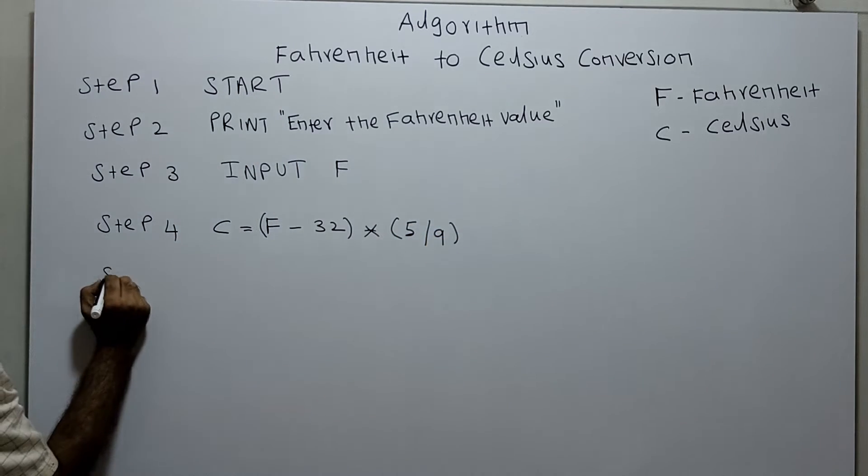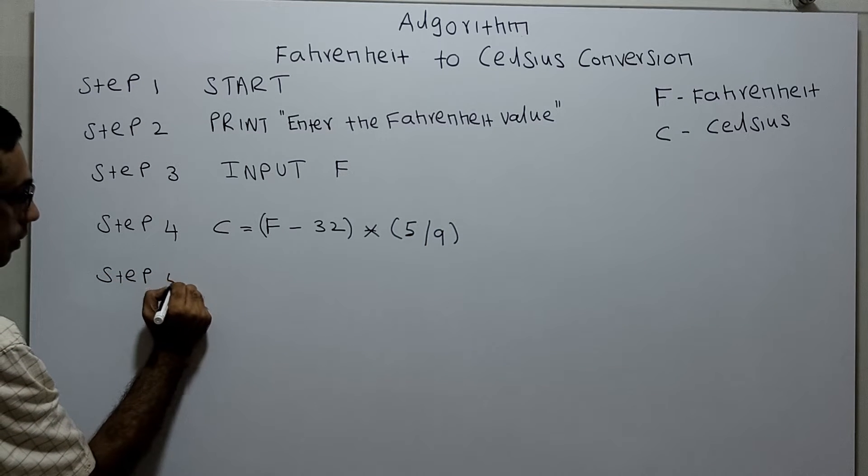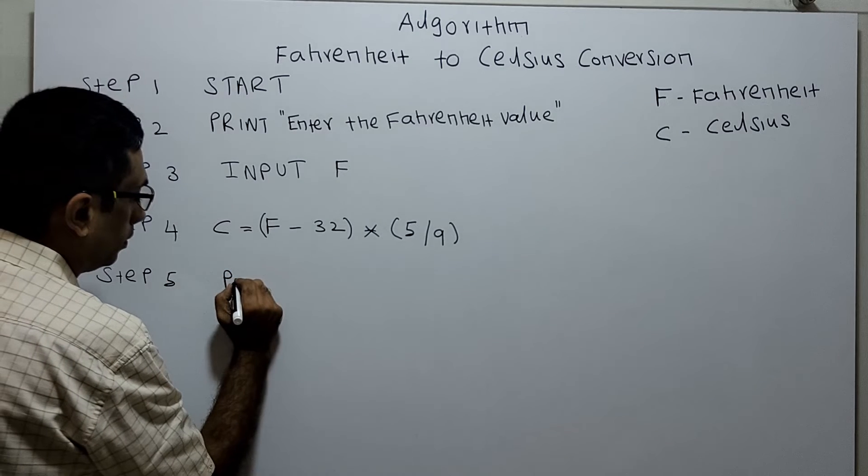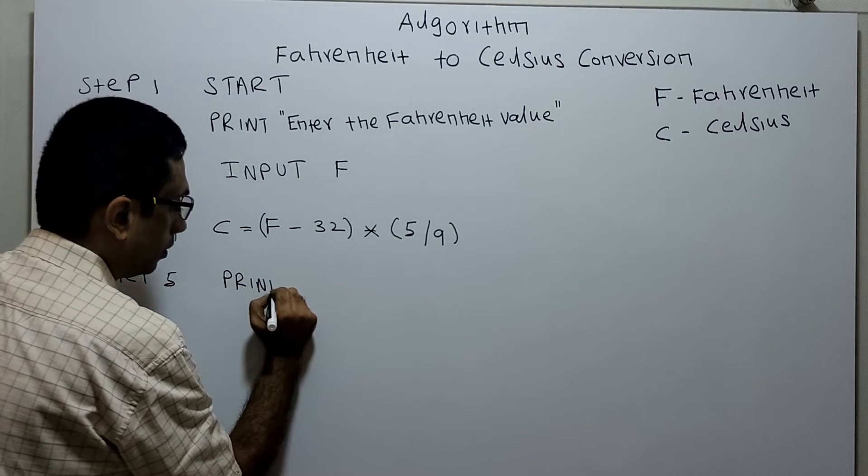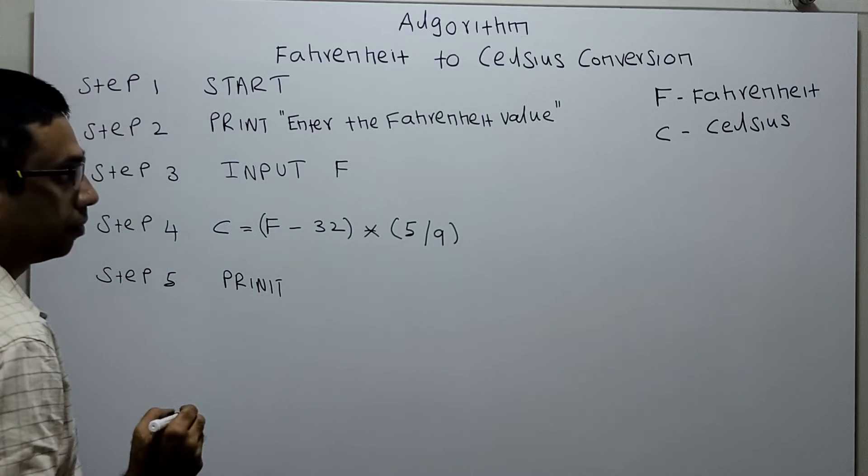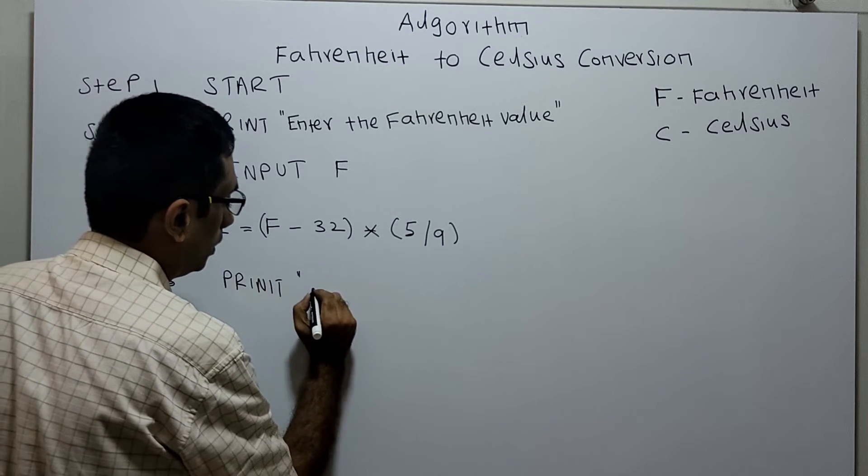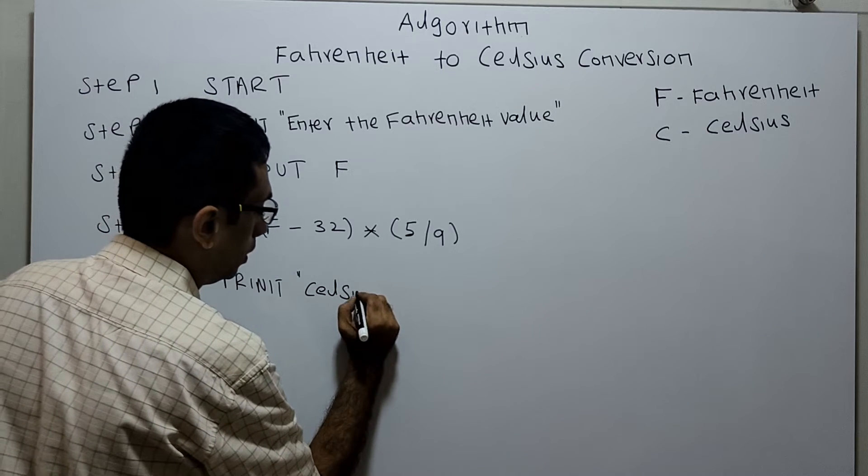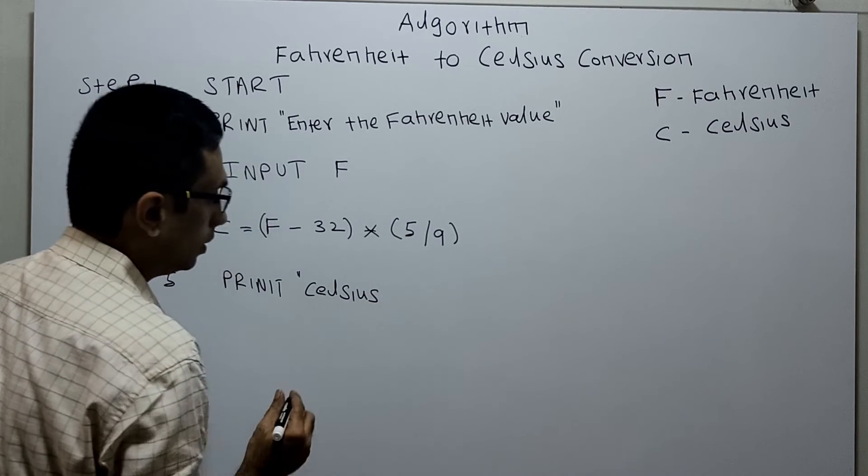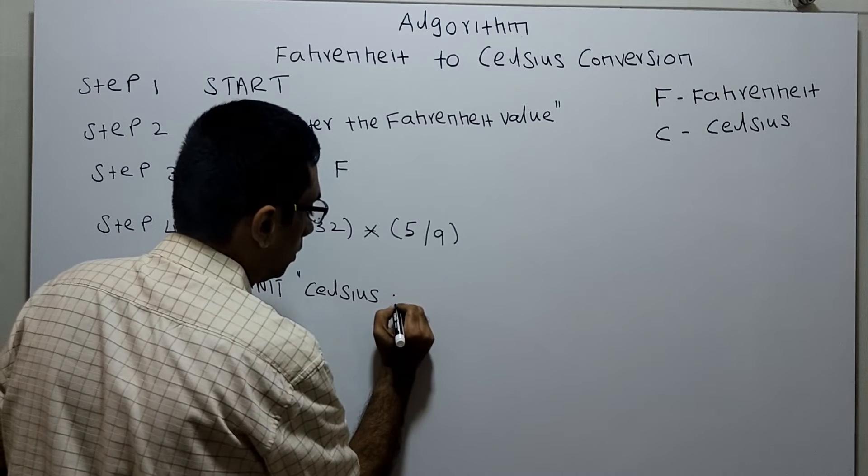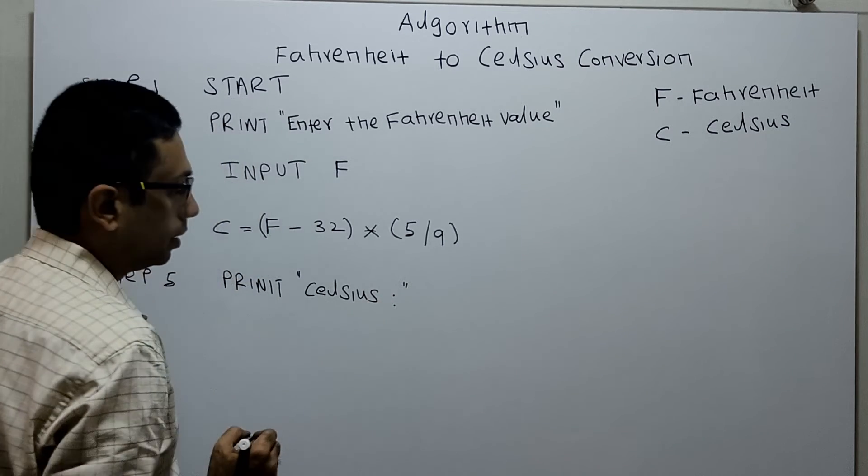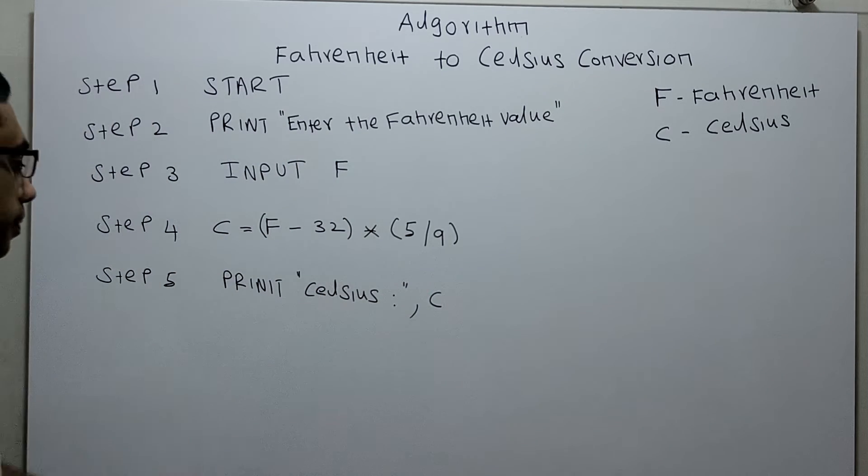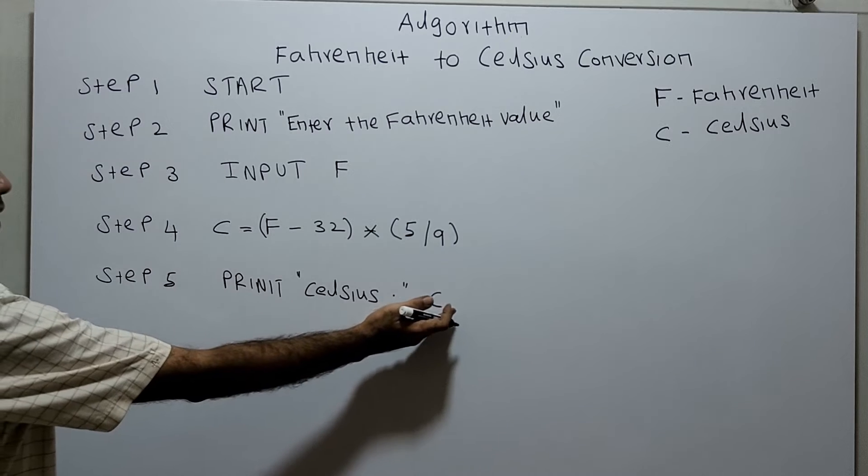Step five: Print the centigrade value. Print 'Celsius:' and then print the value of the variable C, printing the result.